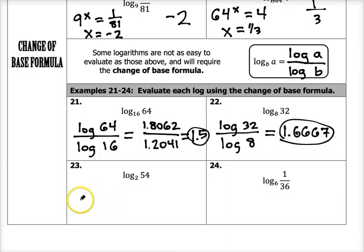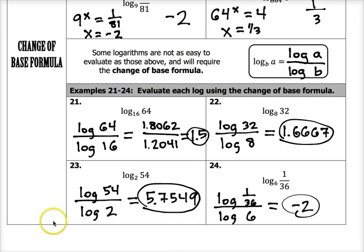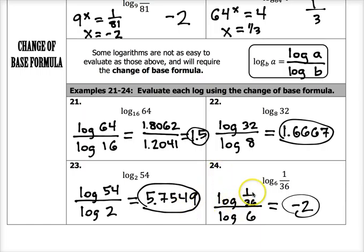Go ahead and hit pause and try problems 23 and 24, then click play to check your answer. For problem 23: log base 10 of 54 divided by log base 10 of 2, which gives 5.7549. And problem 24: log base 10 of 136 divided by log base 10 of 6 gives an answer of negative 2. If you have any questions over this video, write those down. Until next time, have a nice day — you're all wonderful people. Take care.